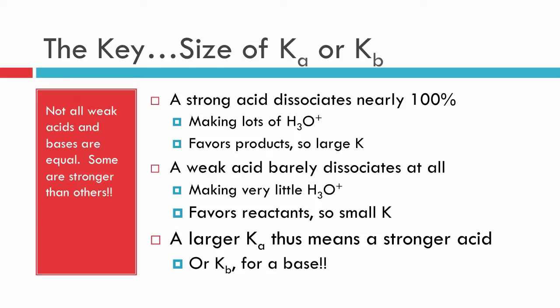So the key to all this is knowing the magnitude or the size of your equilibrium constant, Ka or Kb. The key point is that a strong acid dissociates nearly 100%, and therefore makes a lot of the hydronium ion, and therefore has a very large equilibrium constant. On the other hand, weak acids, they barely dissociate. They produce very little products, meaning very little of the hydronium ion, and have small equilibrium constants. All you have to remember then is that a large Ka means it's a stronger acid when comparing two acids. And if we're doing this for bases, it would be the magnitude of the Kb, or the base equilibrium constant.